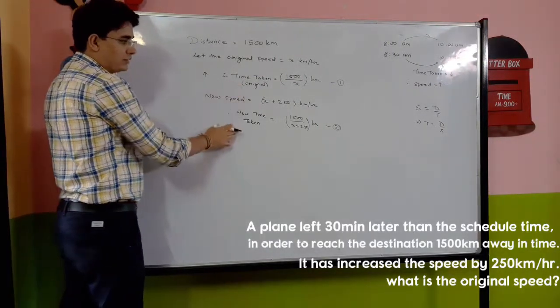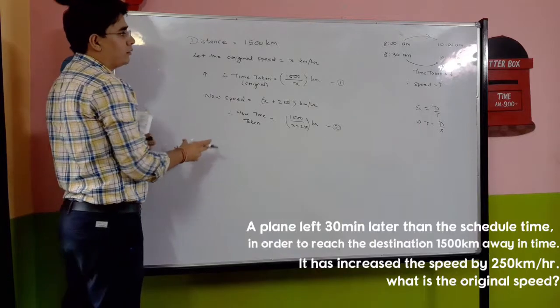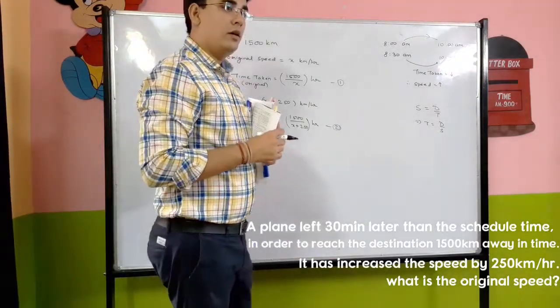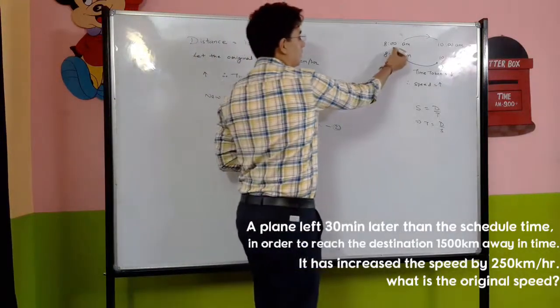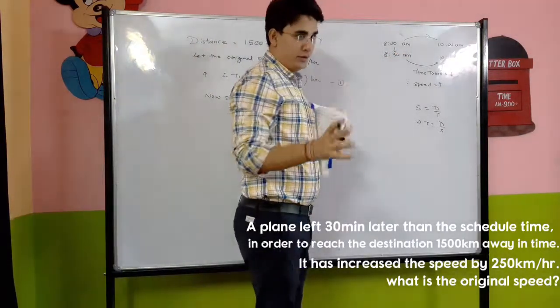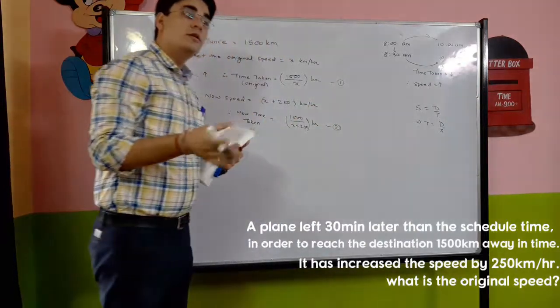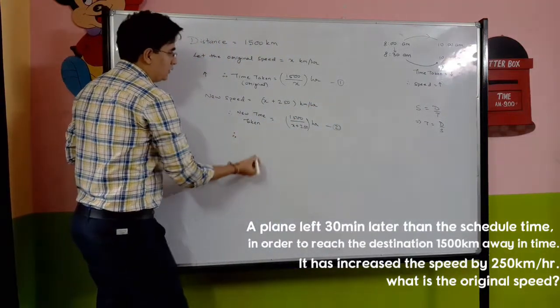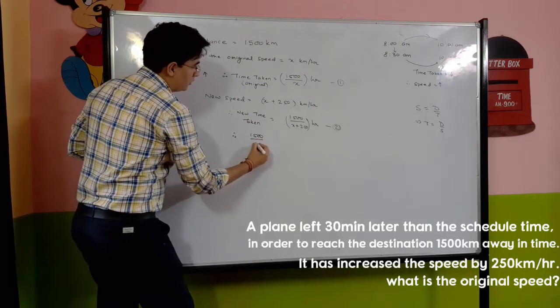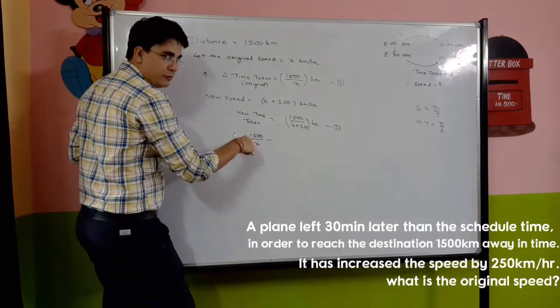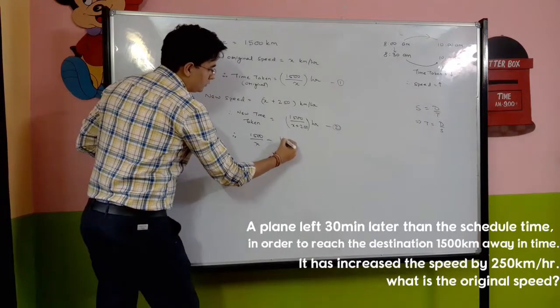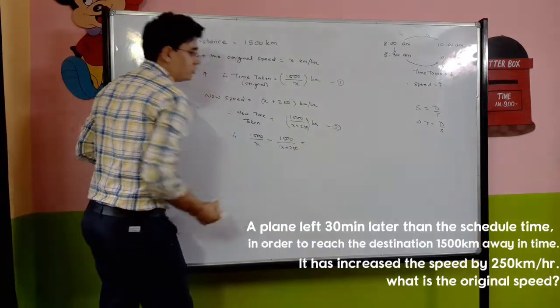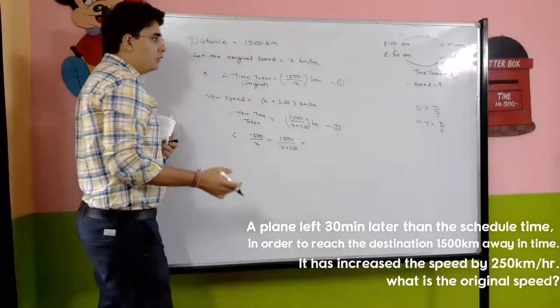So more minus less, what is the gap? How much is the gap? The plane has gone half an hour late. The plane was half an hour late. Therefore, 1500 upon x minus 1500 upon x plus 250 is equal to half an hour late.